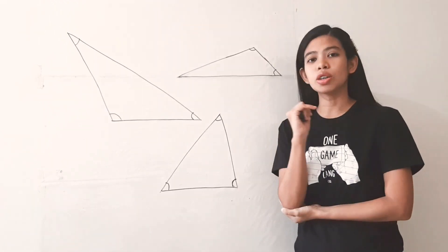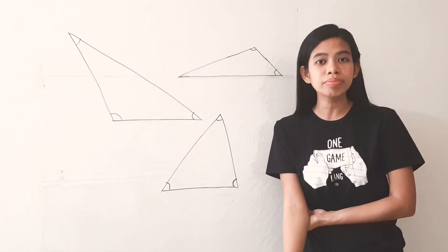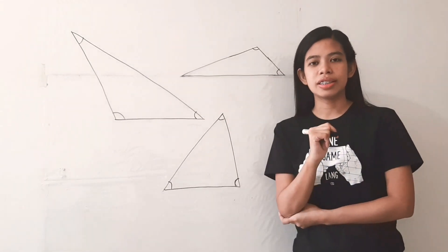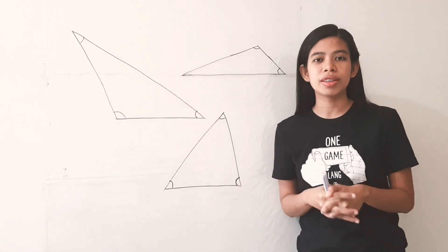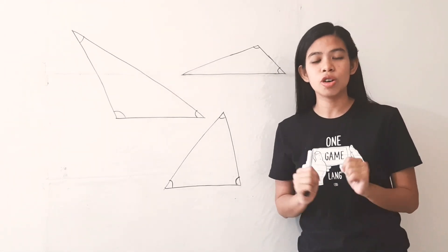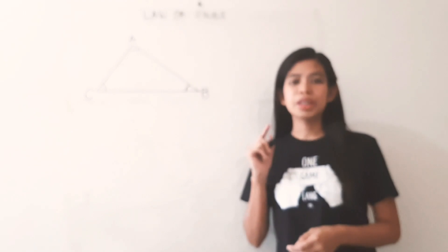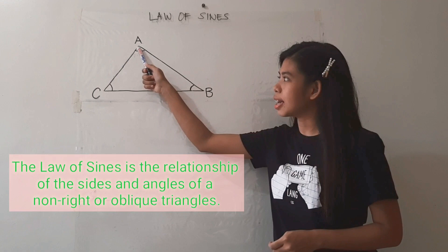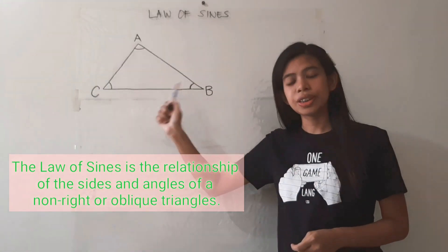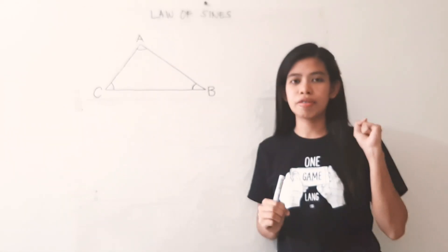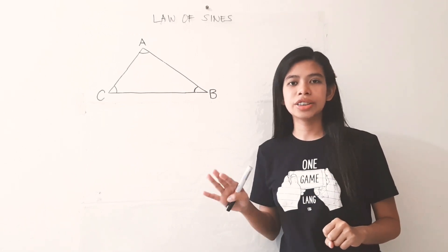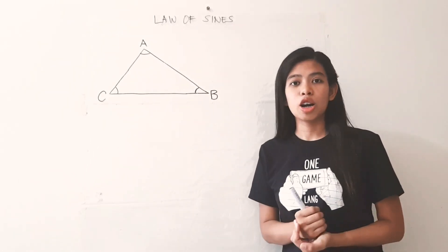Because SOH-CAH-TOA and Pythagorean theorem are only applicable on right triangles. So, what if you were given oblique triangles? We have what we call the Law of Sines. The Law of Sines is the relationship between the sides and the angles of an oblique triangle. Oblique triangles are any triangle which could have obtuse or acute angles — any non-right triangle is considered an oblique triangle.